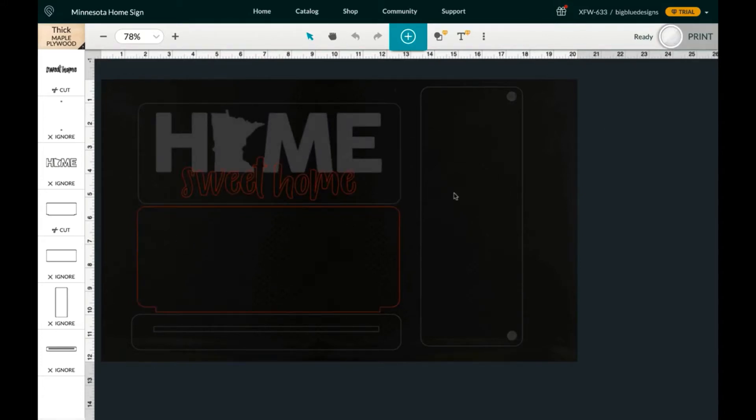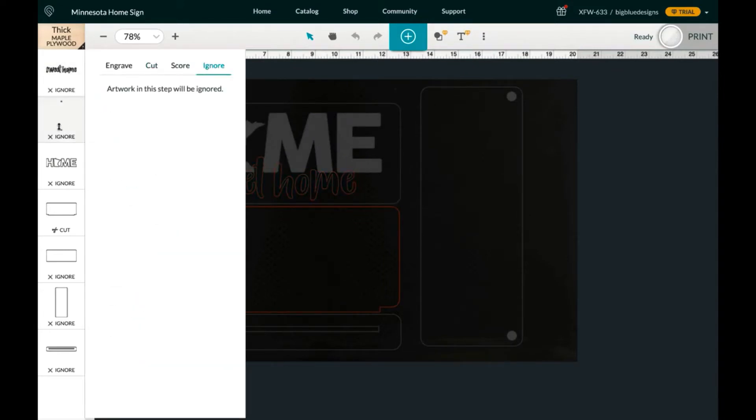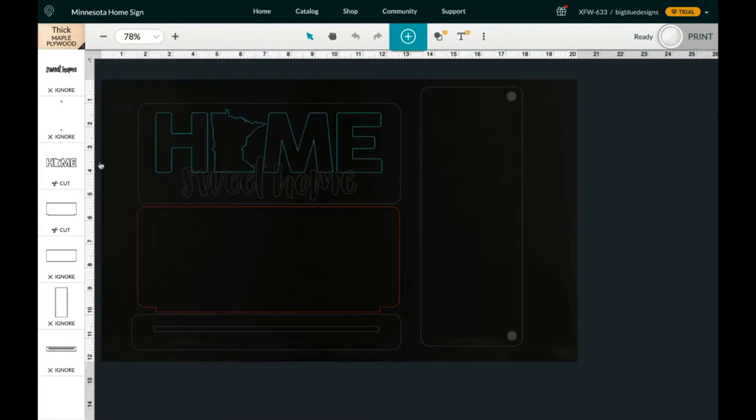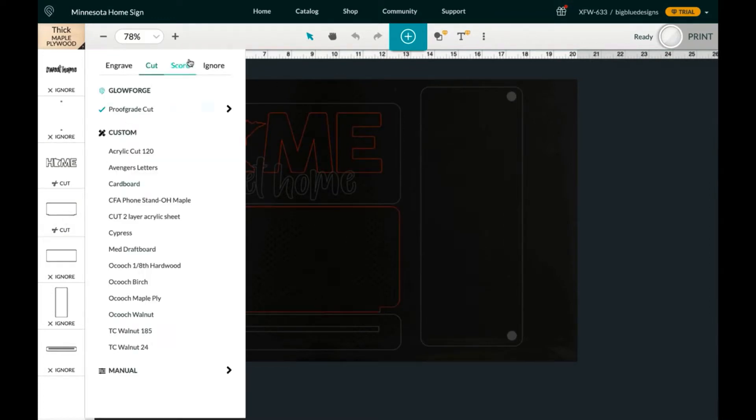So then I'll go ahead and hit print, cut those out, and then I'll work back through it. Go ignore, and I'm going to ignore that one completely because I'm not going to use that one. Cut and ignore, ignore, ignore, cut.